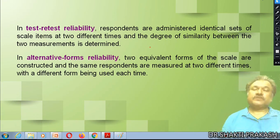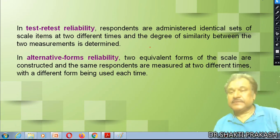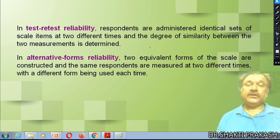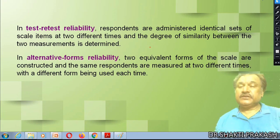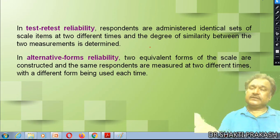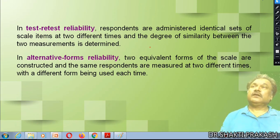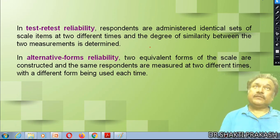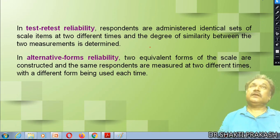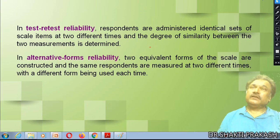In test-retest reliability, respondents are administered an identical set of scale items at two different times, and the degree of similarity between the two measurements is determined. Your respondent fills the form once, and then again after 15 days or one month. The results from the first time should be similar to those from the second time when you retest. This is one way you can check reliability.